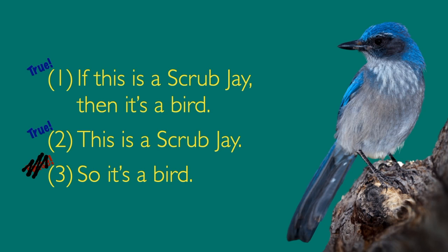Of course, maybe this isn't actually a scrub jay — it's easy to misidentify birds, and maybe you don't know anything about jays. But remember, that doesn't matter. What we're doing is imagining the premises are true. We're assuming it is a scrub jay, and then trying to imagine whether it's possible that, as a scrub jay, it's not a bird. That just seems impossible. We were unable to imagine a counter-example, so it's safe to say this argument is valid.